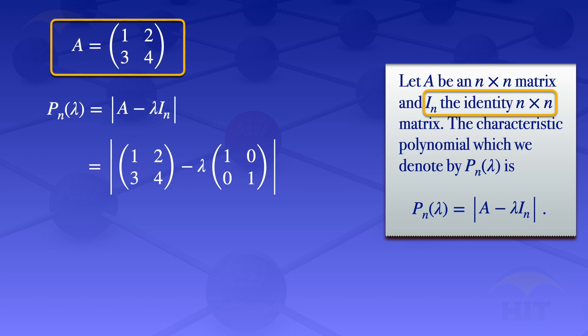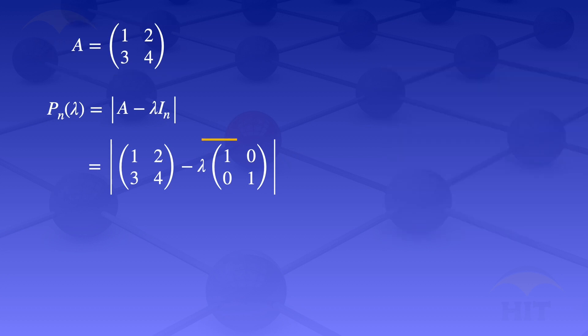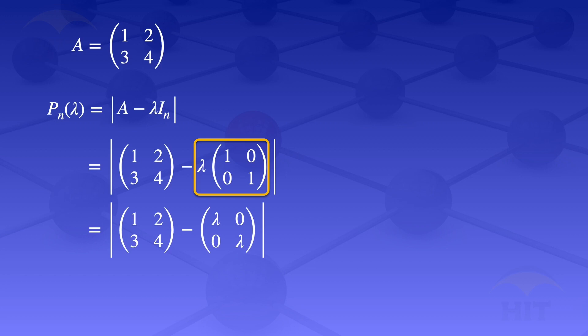That one, zero, zero, one is the two by two identity matrix. Now, multiplying lambda throughout by that identity matrix results in the determinant of one, two, three, four minus lambda, zero, zero, lambda. We can then subtract the matrices by subtracting corresponding elements, giving us the determinant of one minus lambda, two, three, four minus lambda.